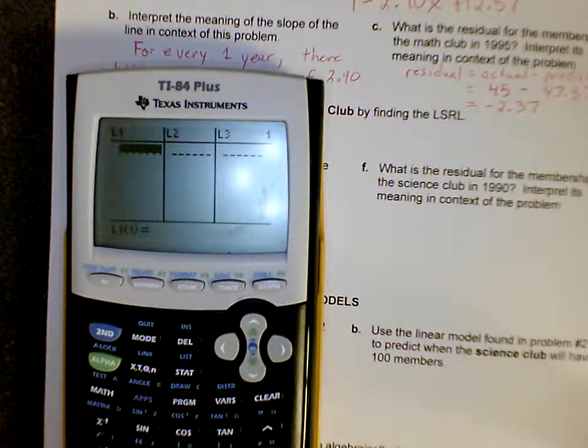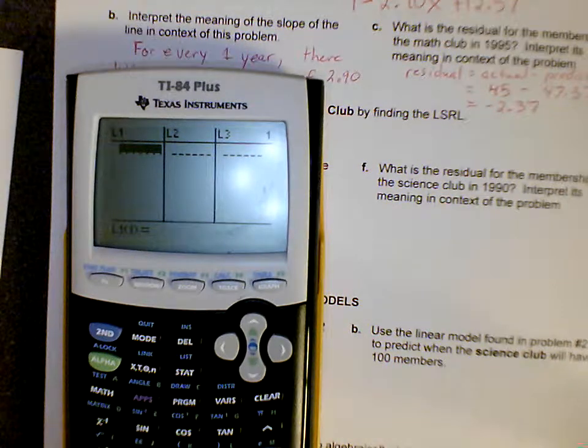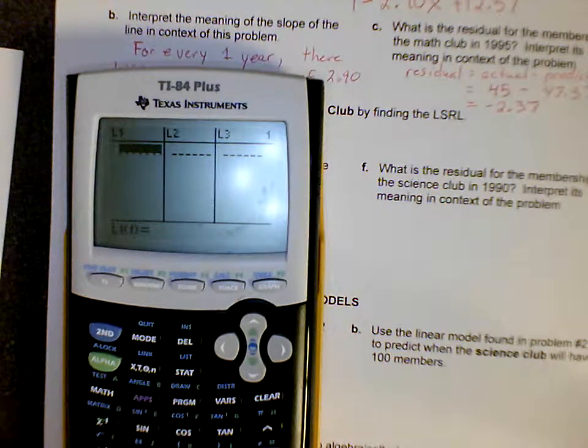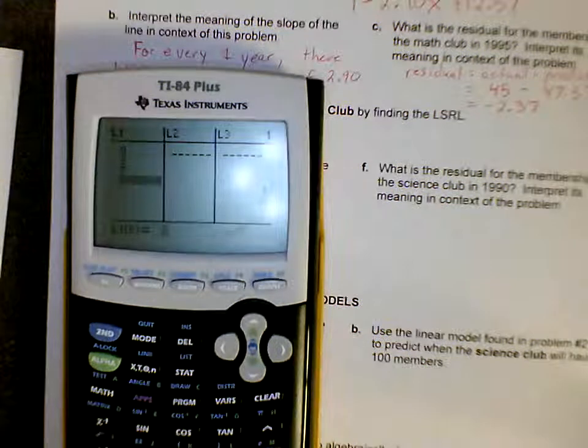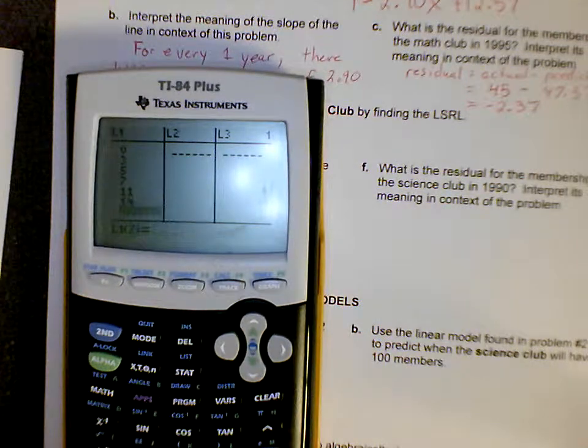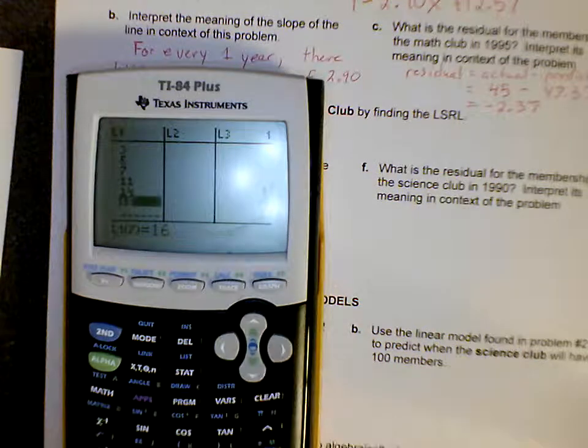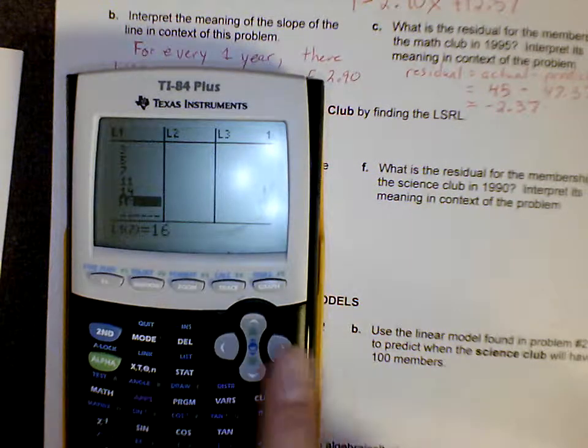We want to start with list 1 and we're going to enter in all of our x values for years since 1983. So 0, 3, 5, 7, 11, 14, and 16. 7 values, that's perfect, that's exactly what we want.